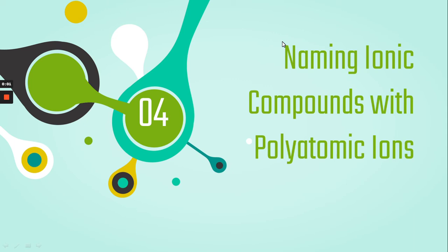Hey guys, here is our last lecture for our ionic compounds unit. Today we're going to talk about naming ionic compounds that contain polyatomic ions. You're going to need your periodic table — if you don't already have that out, make sure that you grab it because you're going to need to reference it as we go through these slides.